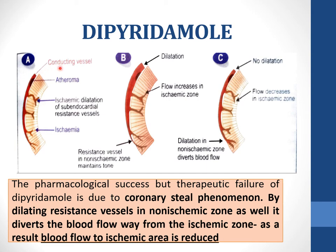Here you can see the conducting vessel with atheroma. By taking dipyridamole, dilation of ischemic resistance vessels is seen. In the normal conducting vessel, dilation also occurs. The flow increases in the ischemic zone, but dipyridamole also causes dilation in the non-ischemic zone resistance vessels. As a result, blood flow in the ischemic area is reduced, which is not therapeutically desired. This phenomenon is called vascular steal.